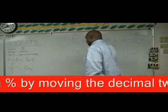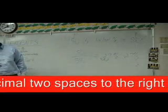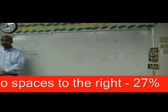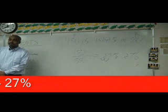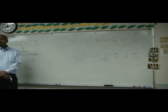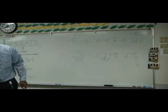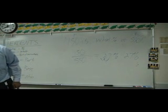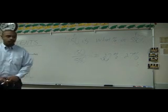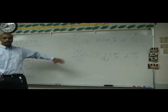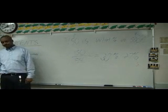Does it make sense that 150 is 27 percent of 550? Three point six six. I think you did 550 divided by 150. You had it the other way around. You had base on top.